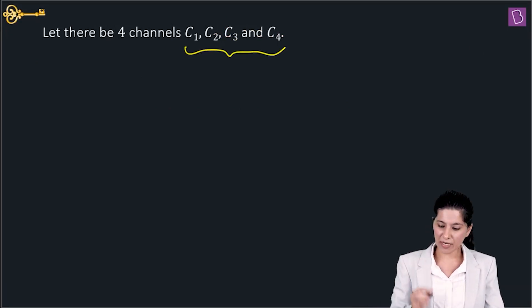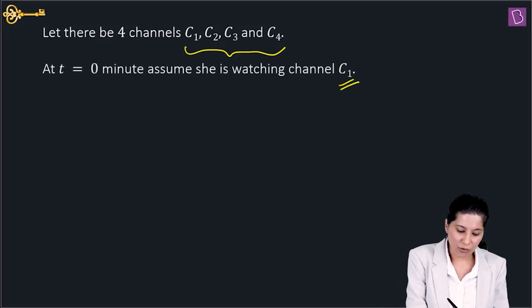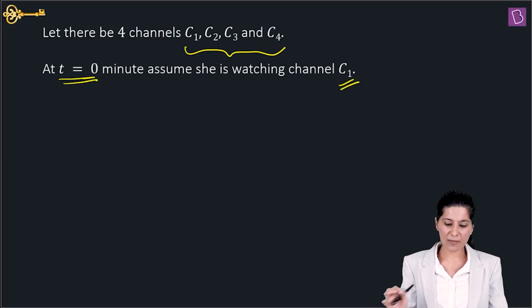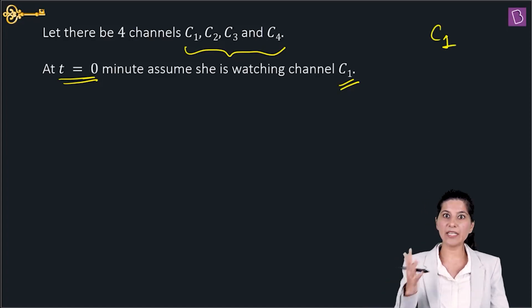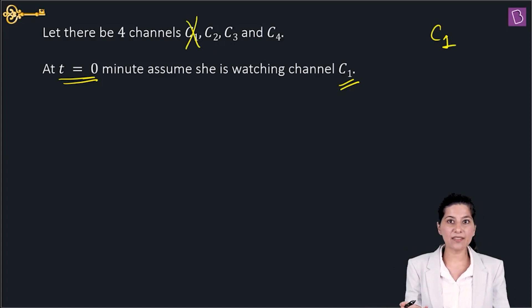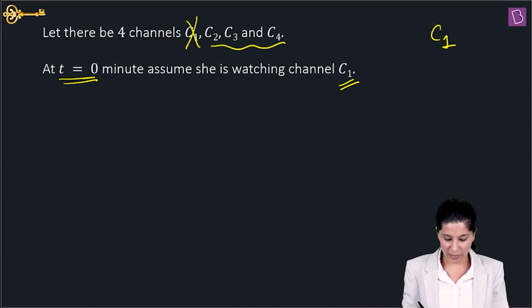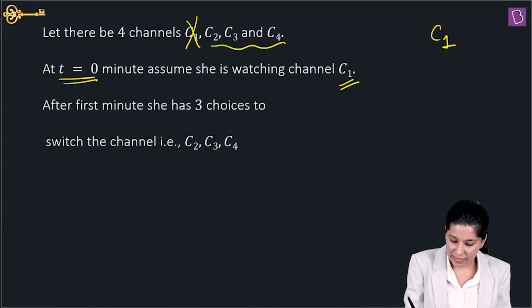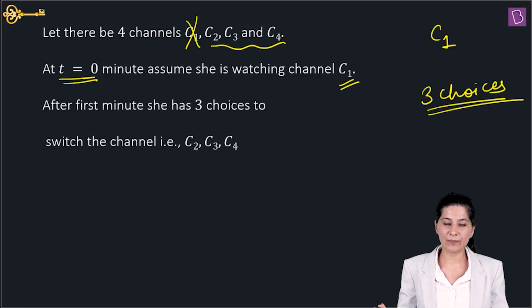We assume she is watching C1 at time t = 0. After 1 minute she must change — she cannot stay on C1 — so she has 3 choices: C2, C3, or C4.